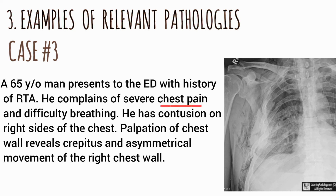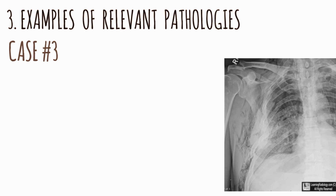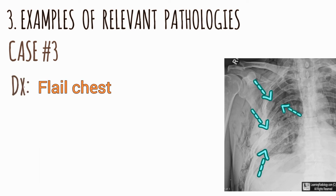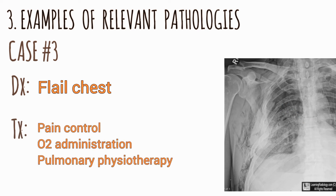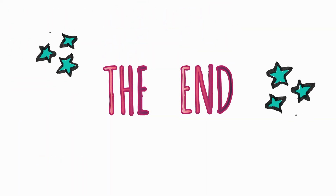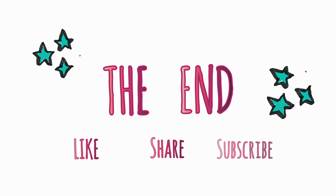The third case presents chest pain, difficulty breathing, contusion on the right chest, crepitation, and asymmetrical chest movement — typical features of rib fracture or flail chest. On the radiograph, multiple rib fractures are seen, along with pulmonary contusion and subcutaneous emphysema — air trapped under the skin. Standard management is pain control, oxygen administration, and pulmonary physiotherapy.